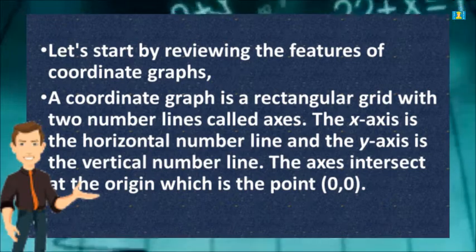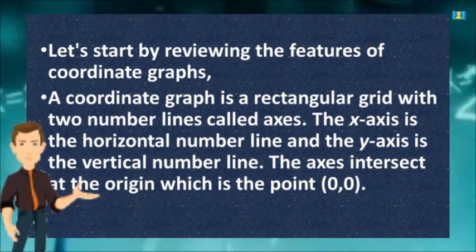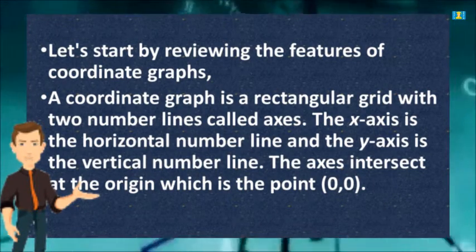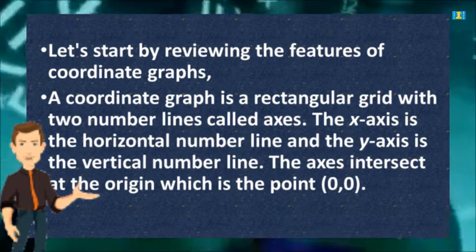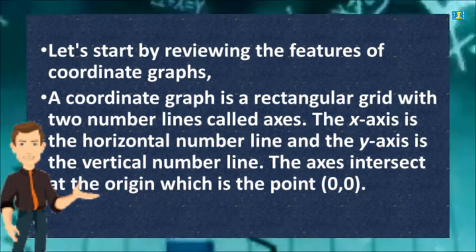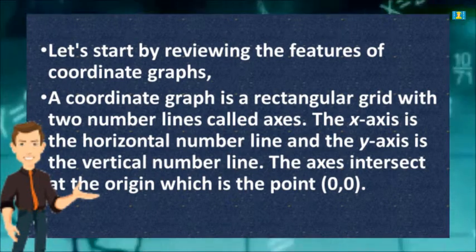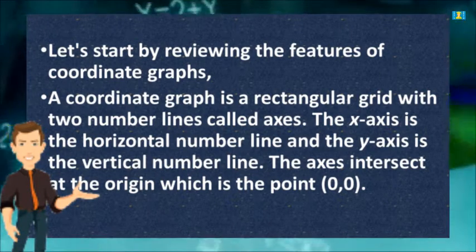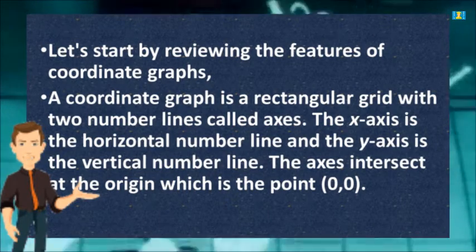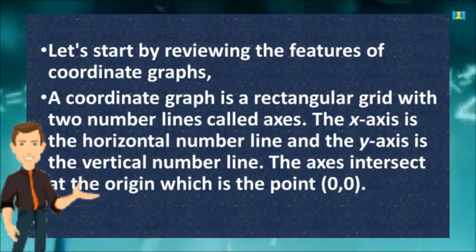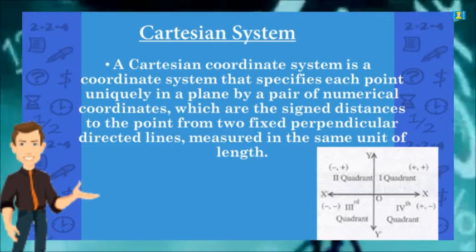Let's start by reviewing the features of a coordinate graph. A coordinate graph is a rectangular grid with two number lines called axes, as shown in the figure. The x-axis is the horizontal number line and the y-axis is the vertical number line.